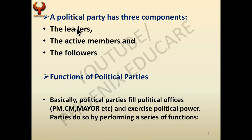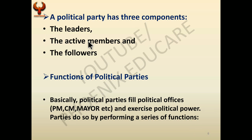A political party has three components: leaders, active members, and followers. Leaders are the important figures, like Narendra Modi or Amit Shah in BJP, or Sonia Gandhi and Rahul Gandhi in Congress. Active members are other members and smaller local-level leaders. Followers are people who are very loyal to a party and consistently vote for it — for example, those who always vote for BJP or Congress. These are the three main components of any political party.